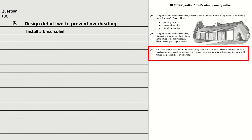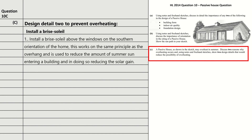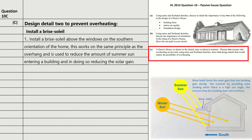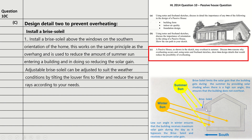Design detail two: install a brise soleil above the windows on the southern orientation of the house. This works on the same principle as the overhang and is used to reduce the amount of summer sun entering the building. It's essentially a stainless steel or aluminium mechanism bolted above the window. You can also get adjustable versions with louvre vents so you can control how much light enters by adjusting the angle of the louvres. That covers the question — make sure you can make those sketches, as the sketches are a big help. Thanks.